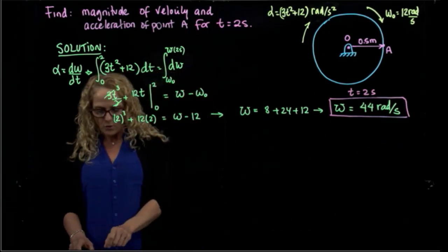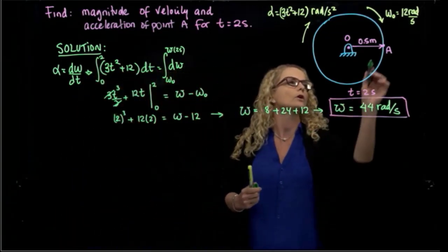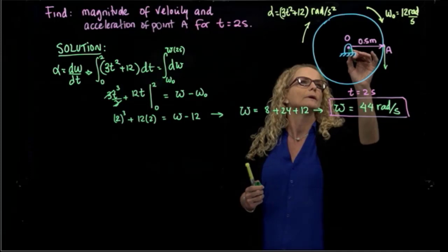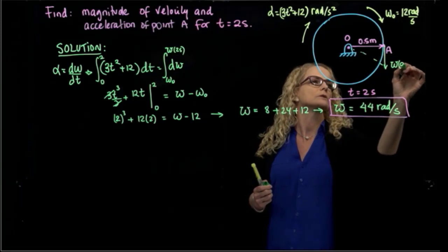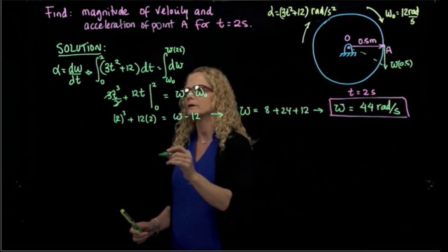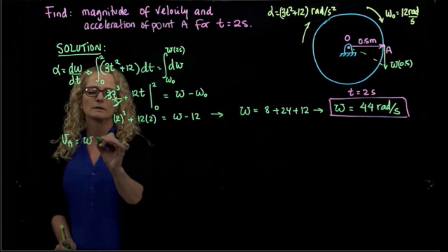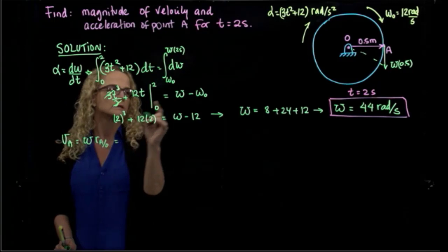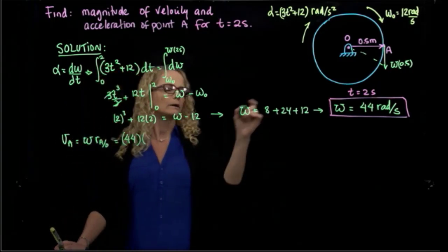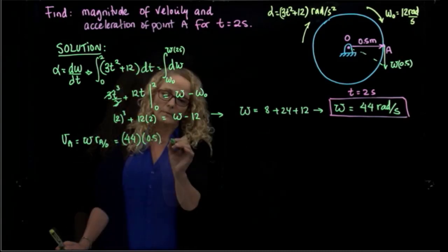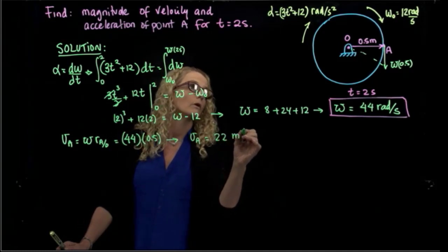We were able to find the angular velocity. Since this system is rotating, the velocity of A equals the angular velocity times the distance from O to A, which is 0.5 meters. So the velocity of A is equal to 44 times 0.5, giving us 22 meters per second.